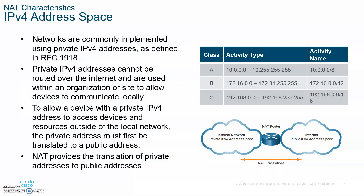When we talk about NAT, there are private addresses that you should know about. You already know about the internal network private IPv4 address space. Private IP addresses cannot be routed over the Internet. The Network Address Translation protocol, which sits on the router, translates private IP addresses to public to allow access to the Internet. It allows the conservation of public IPv4 addresses.